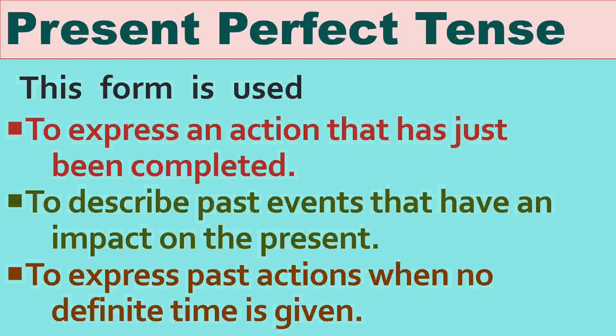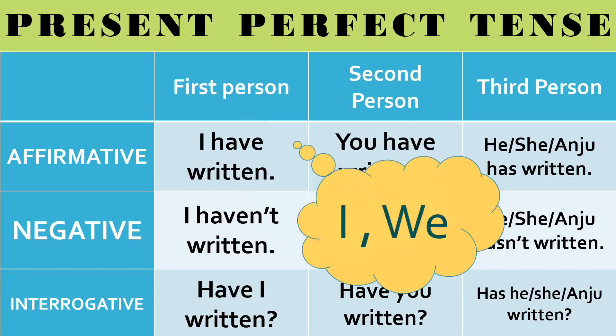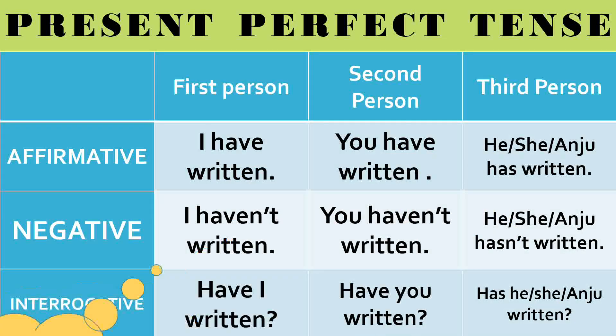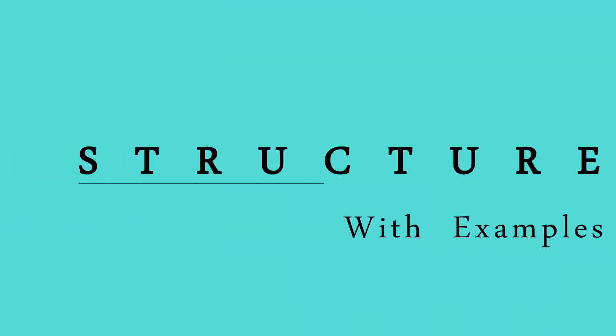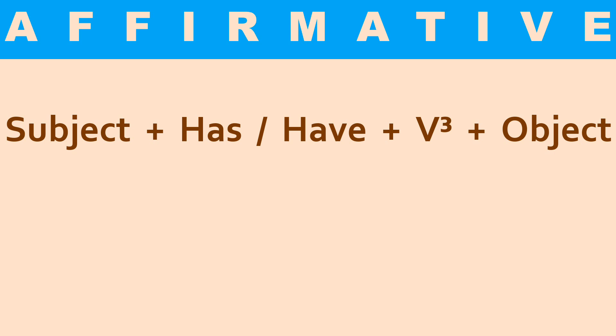Third point: to express a past action when no definite time is given. For example, 'I have read Gulliver's Travels' — this is a past action but I am not telling here at what time I have read. So we use present perfect to express past action when no definite time is given. Now let's see the chart. We write subject, then helping verb has or have, then third form of the verb, and object or complement.